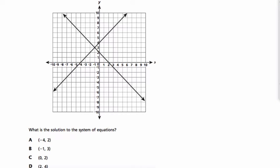Alright, so this problem says that Lucy graphed a system of linear equations. What is the solution to the system of equations?